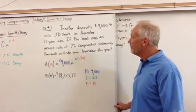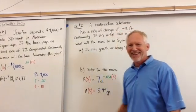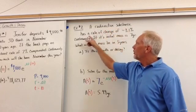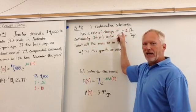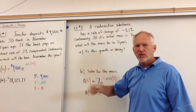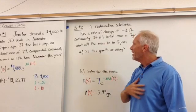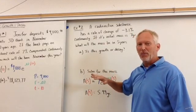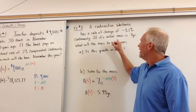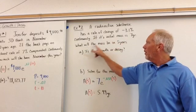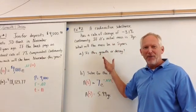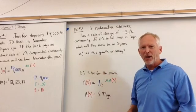Example number two: Let's say a radioactive substance has a rate of change of negative 3.1% continuously, so it's always decreasing. If its initial mass is seven grams, what will the mass be in five years? Question A: Is this a growth or decay model? Well, I kind of gave it away, but go ahead and think about that.